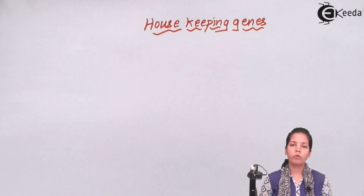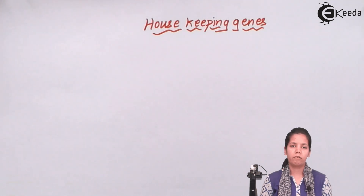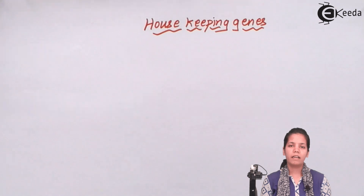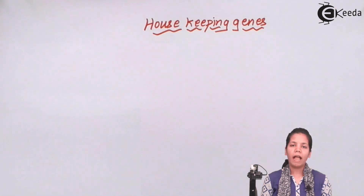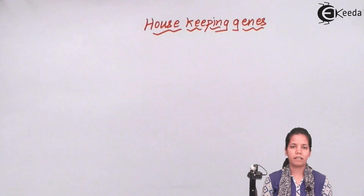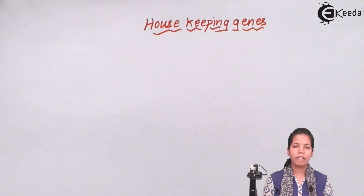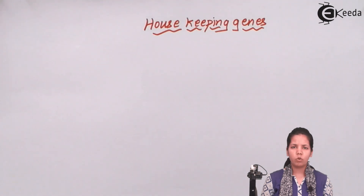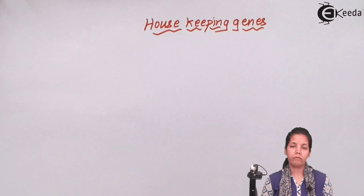We all have two copies of each gene. One gene we get from our father and another gene we get from our mother. Due to differences in genes, we have different contrasting characteristics. The gene which is dominant is always expressed, and the gene which is recessive is never expressed.